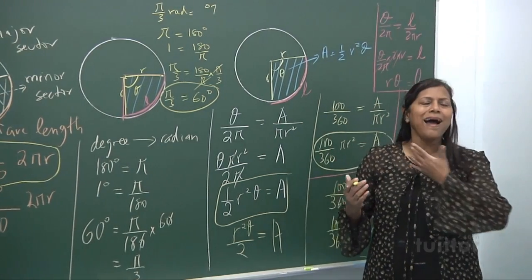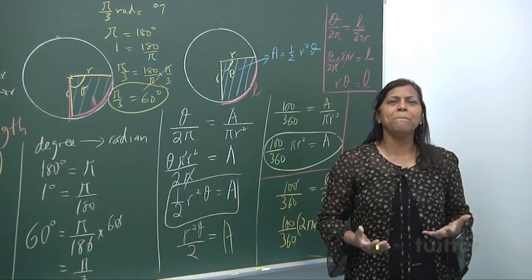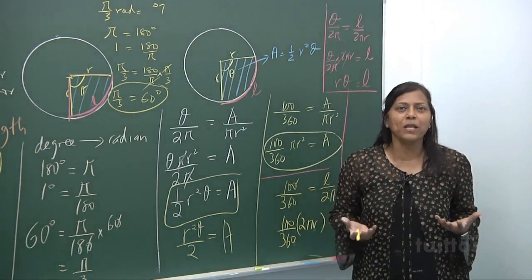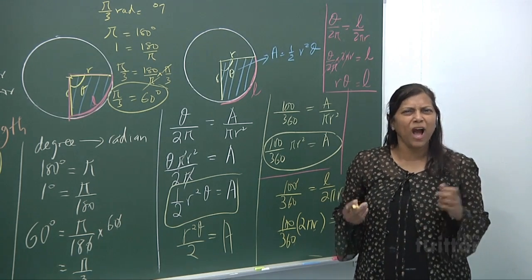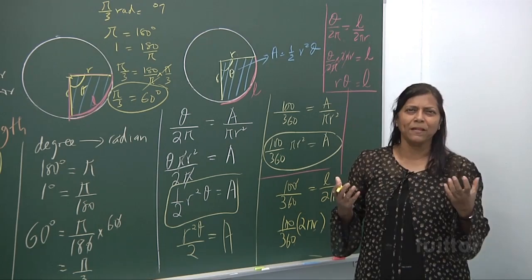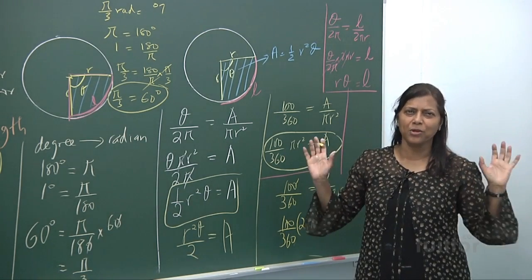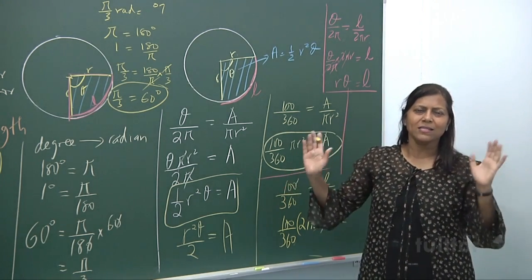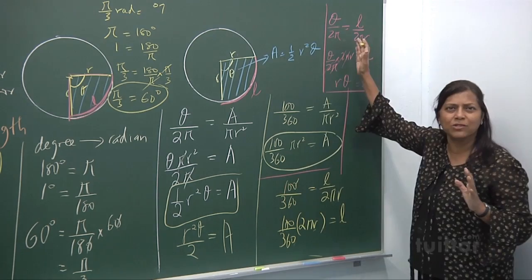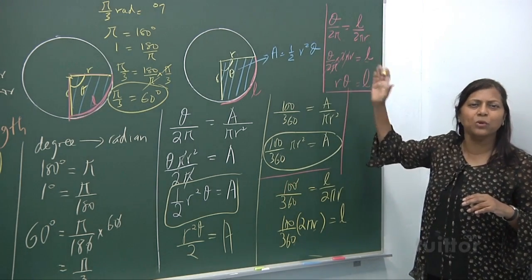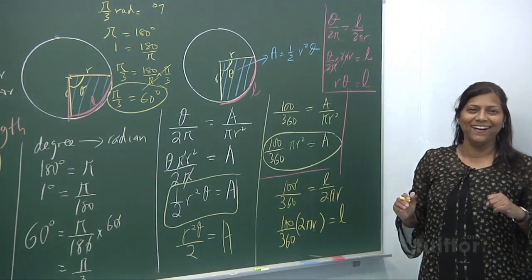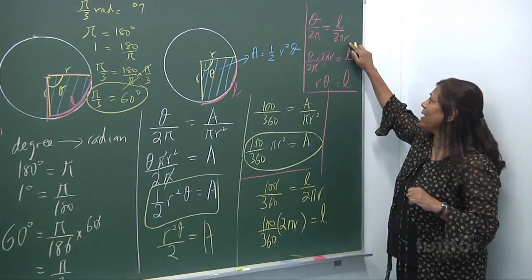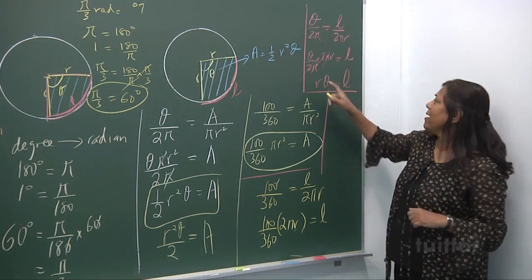I want you to learn maths by understanding the birth of the formula — how it arose, how it all came to be. Similarly, there is a logical connection, there is a reason. So find the connectivity: angle over angle, length over length — bring the 2πR up and you get your L equals Rθ.